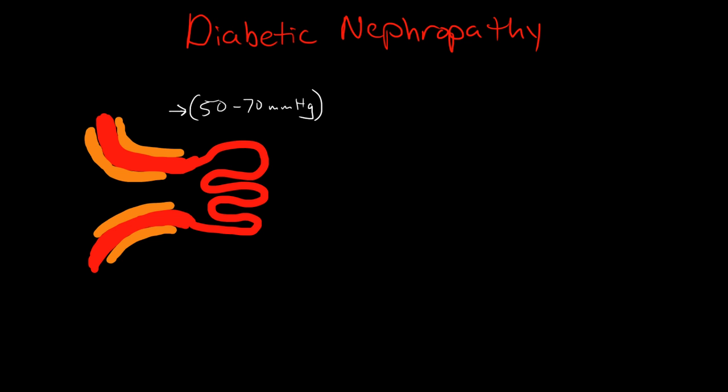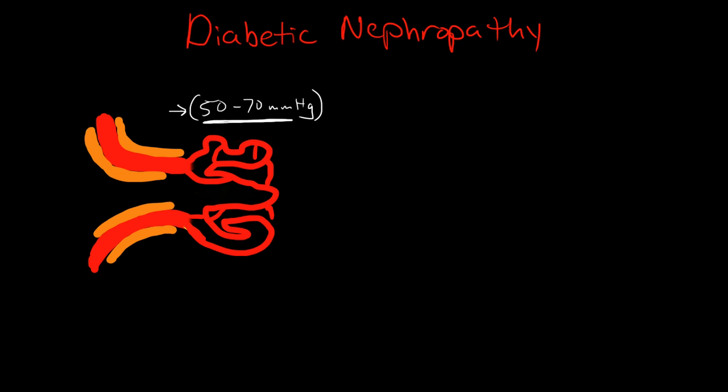Now I want to introduce another adaptation that the glomerulus has to withstand these very high intracapillary pressures. This is called the mesangium. The mesangium is a collection of cells that lays in the middle of the glomerulus, the tuft of capillaries, and it provides some structure.